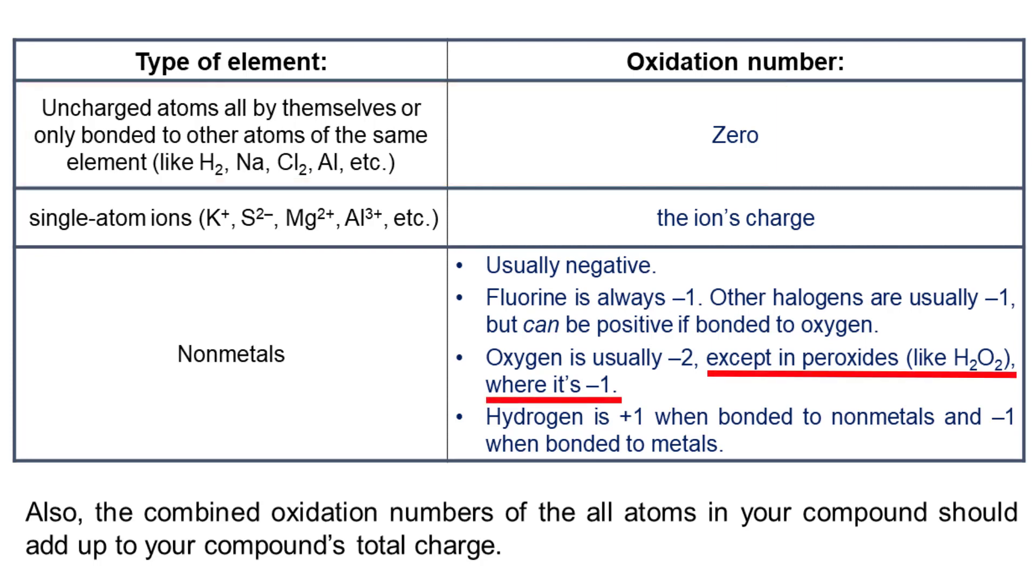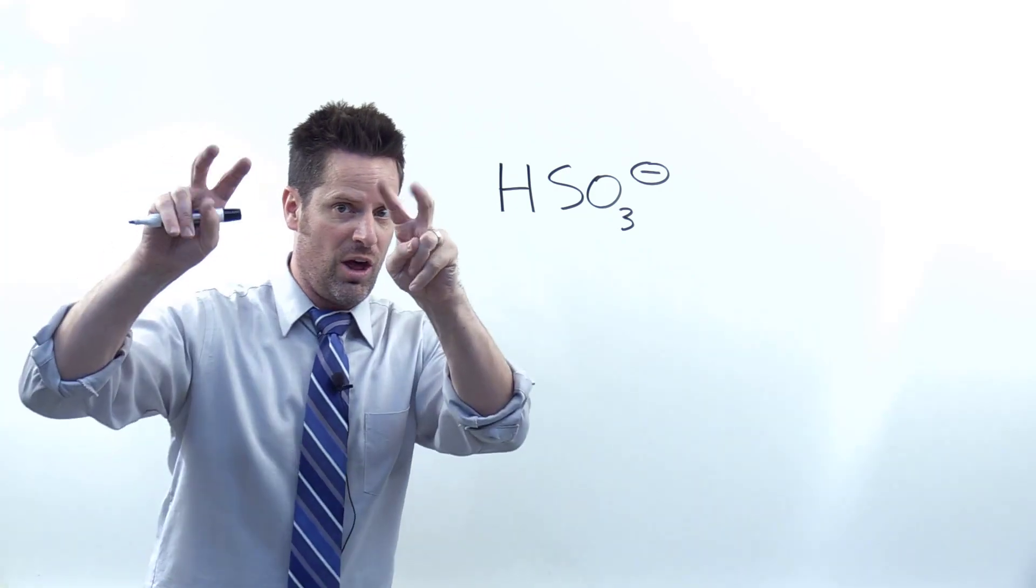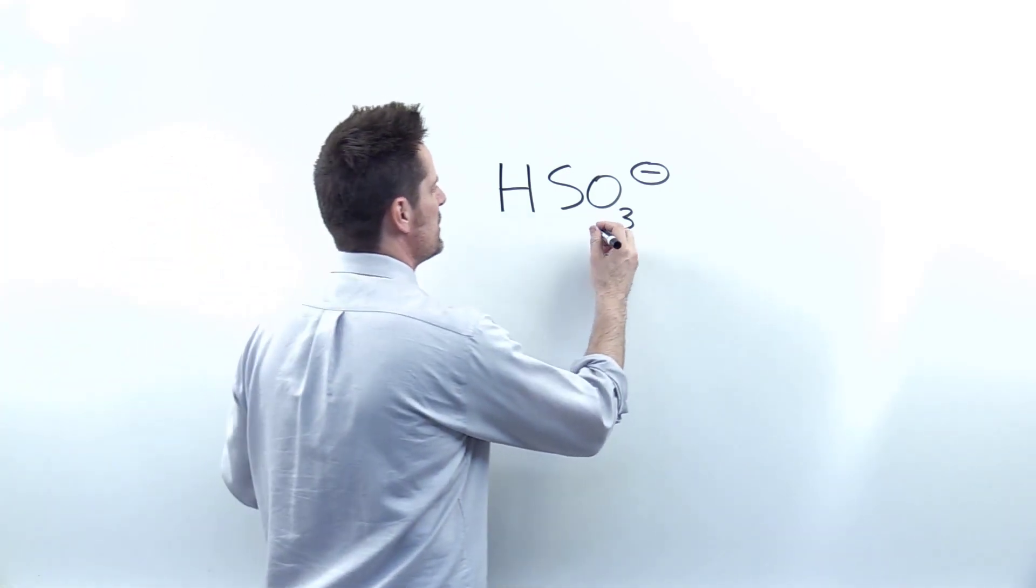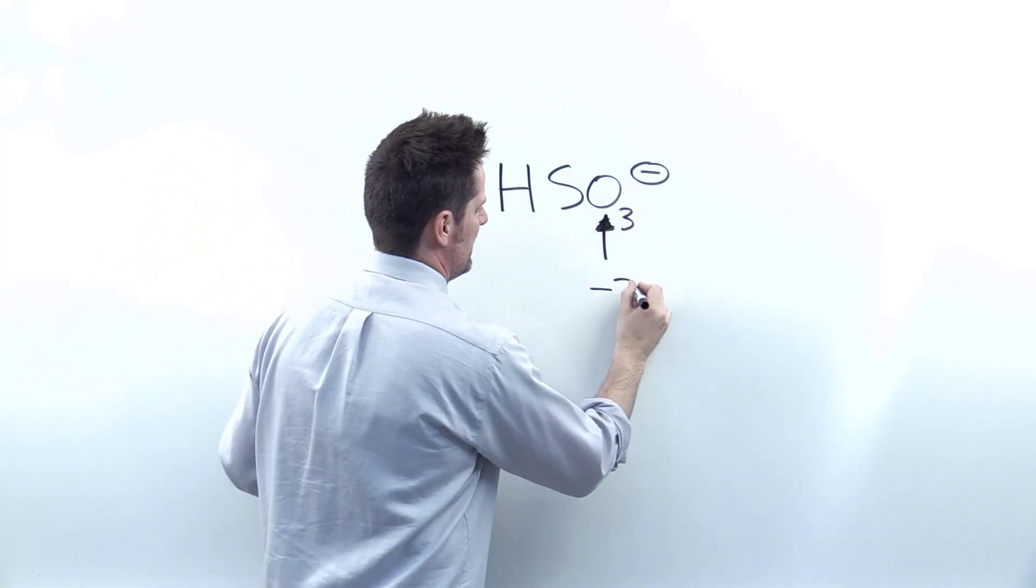Now in other cases, if you have oxygen in a peroxide such as H2O2, hydrogen peroxide, its oxidation number is negative one. And in pretty much all other cases, its oxidation number is negative two. Now this example falls under the all other cases category. So oxygen's oxidation number here will be negative two.